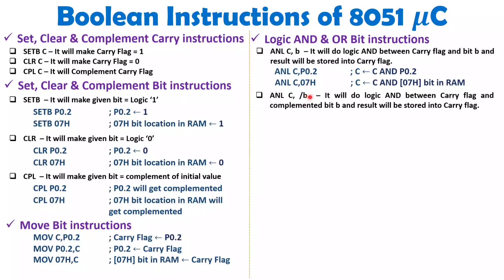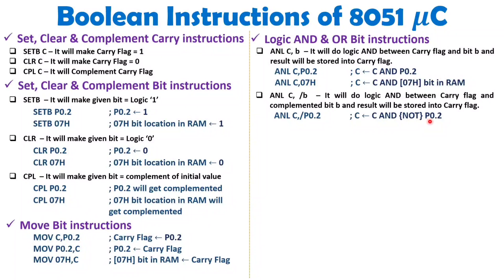With ANL there is one more category using backslash notation: ANL C, /B means logic AND of carry with NOT B. So ANL C, /P0.2 performs NOT of P0.2 first, then ANDs it with carry, and the answer is stored in carry. Similarly, ANL C, /07h takes whatever bit is at that RAM location, performs NOT of it, ANDs with carry, and stores the answer in carry.